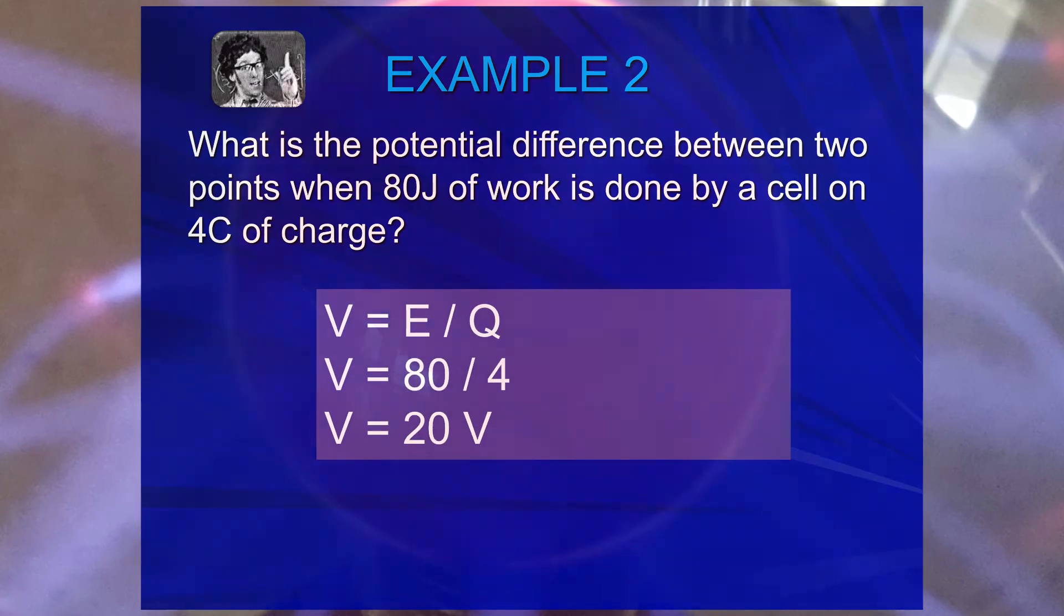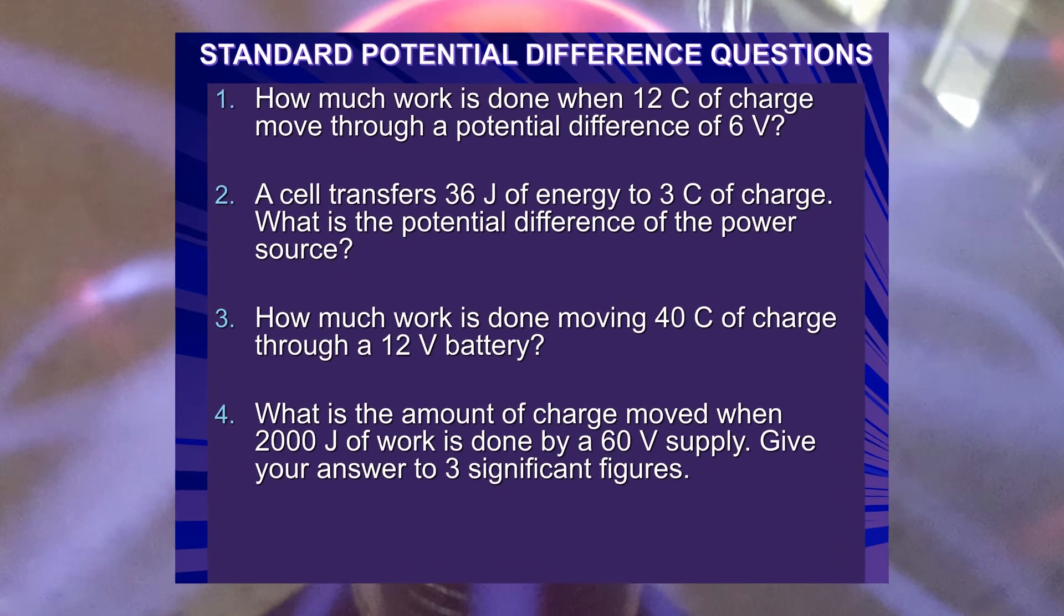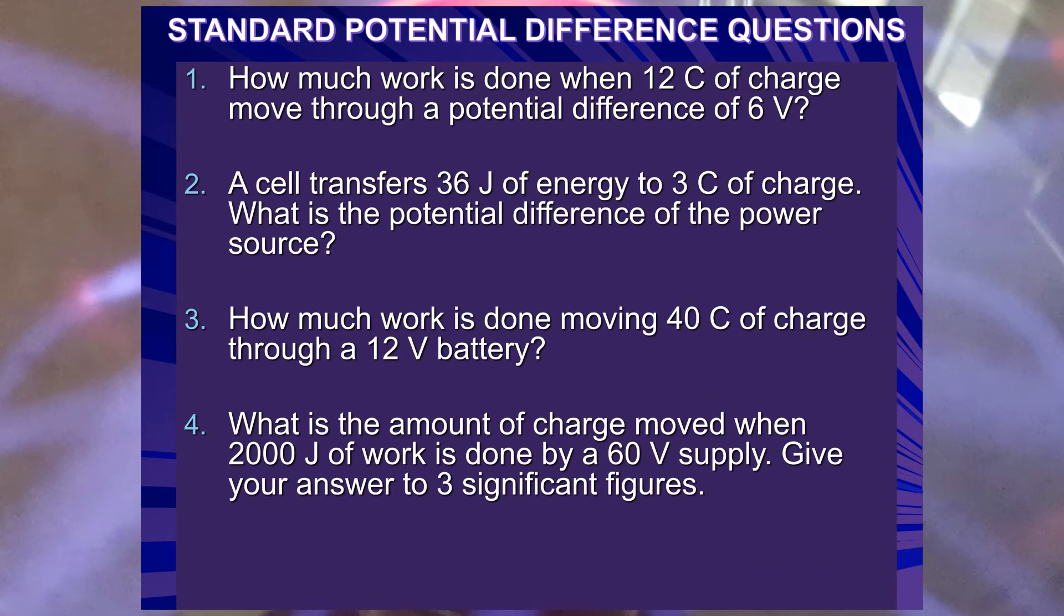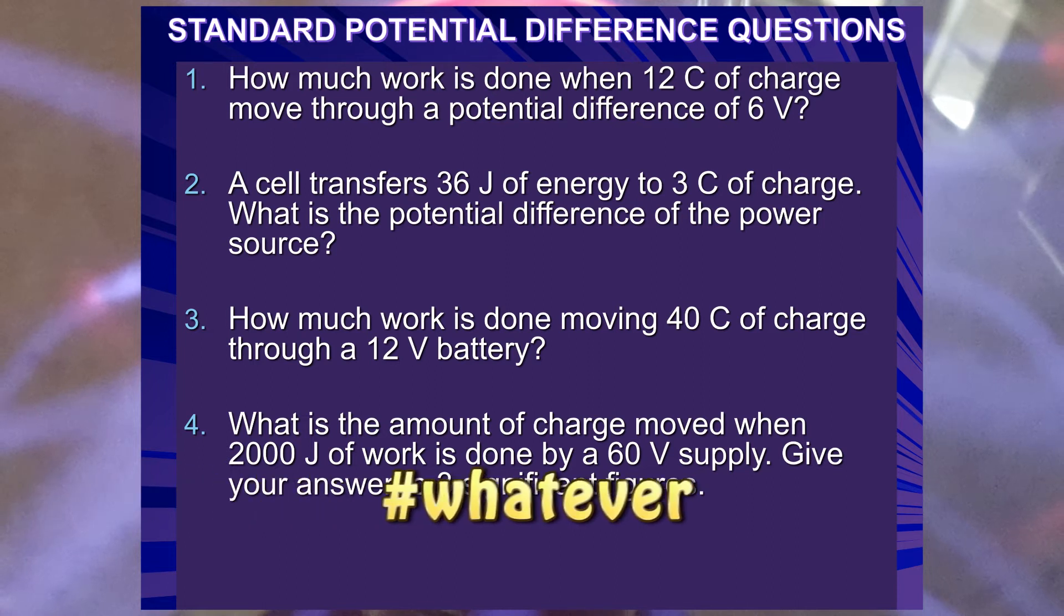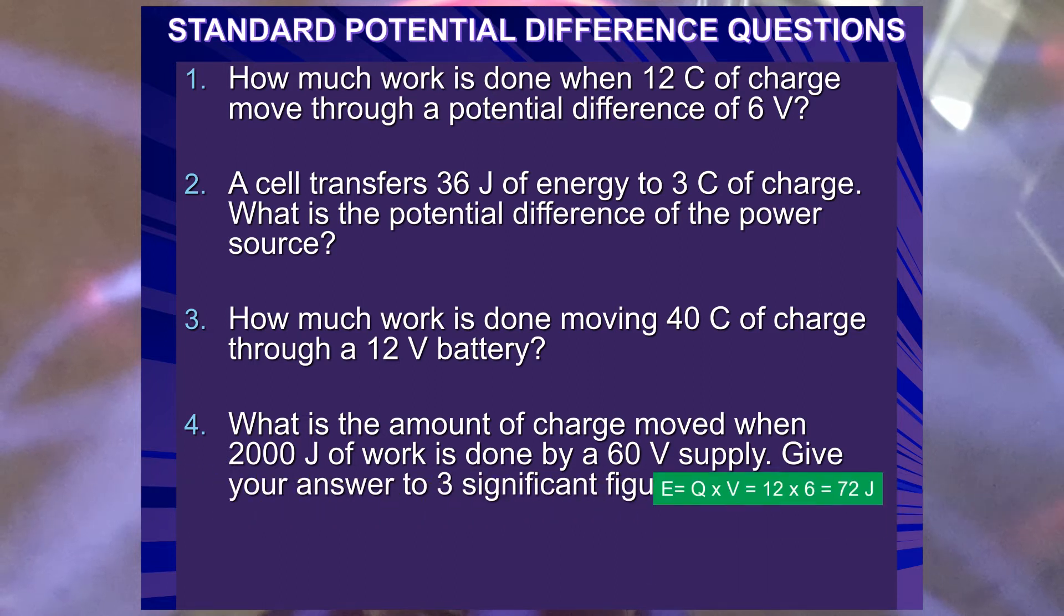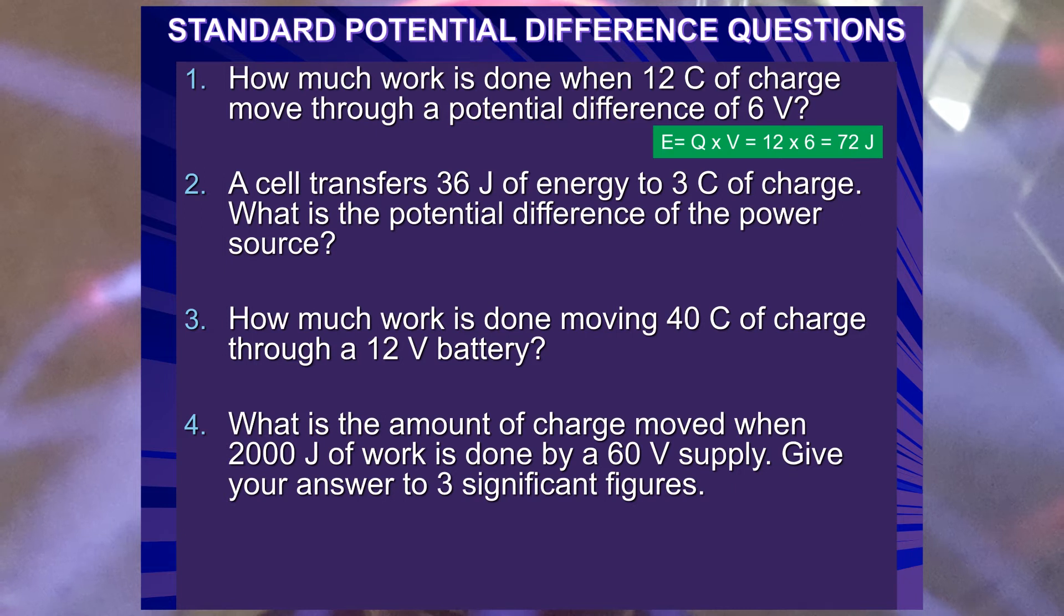Right, let's try some more practice questions. This is a dead easy foundation level. Look out for the clues in the question. So, work done, remember, is the E. Work done is measured in joules. Don't forget that. Keep stressing it. Work done is energy transferred. Potential difference is the posh name for voltage. Oh, there's one of the answers.